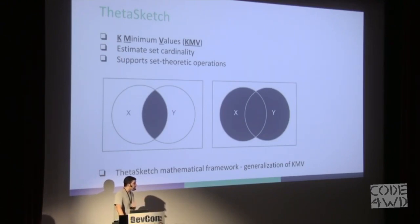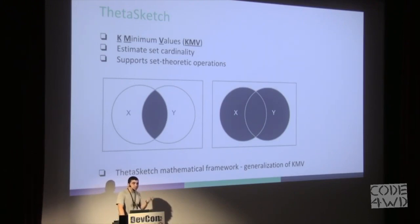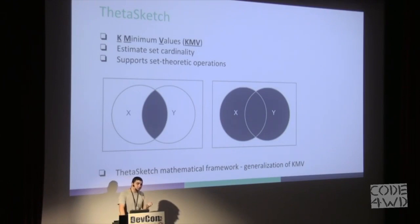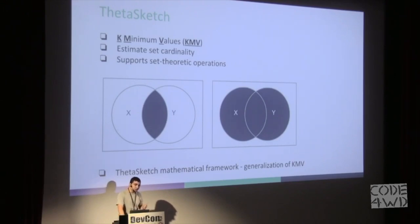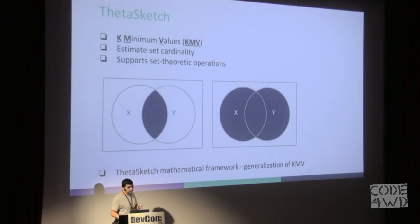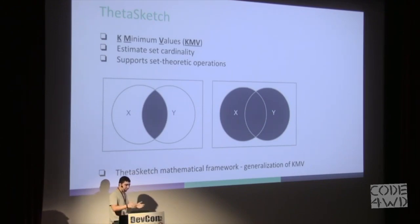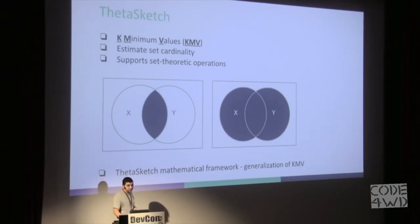The process works like this: for each element in the original set, I run a hash function and get a number. Then I check this number against a dynamic threshold, and if the number is below this threshold, I save it in the sample set. Later, using the sample set and some math, I can estimate the real number of unique elements in the set.